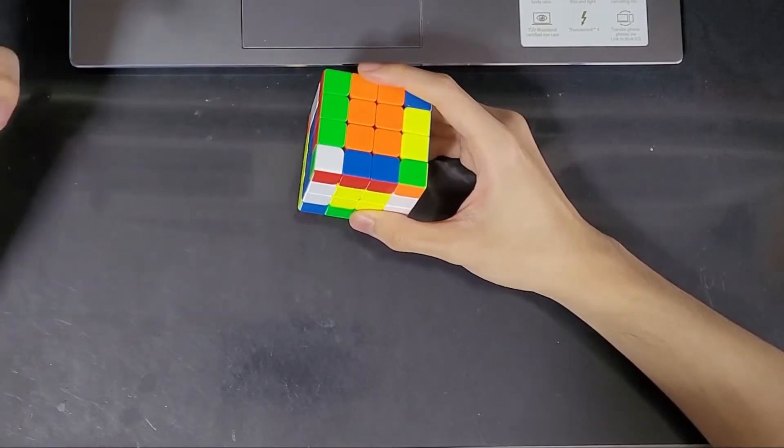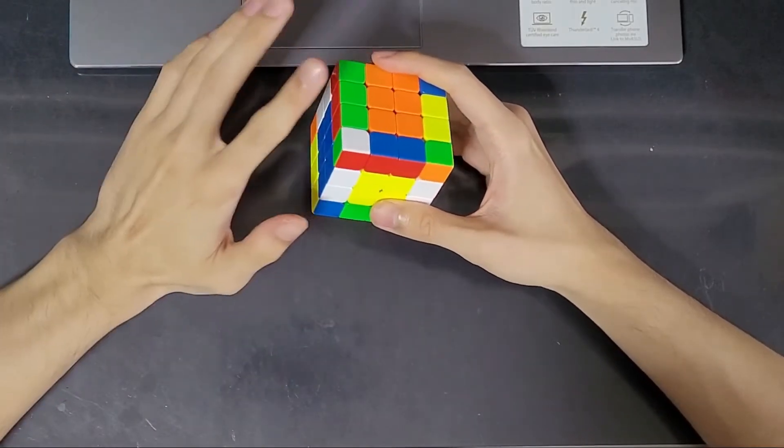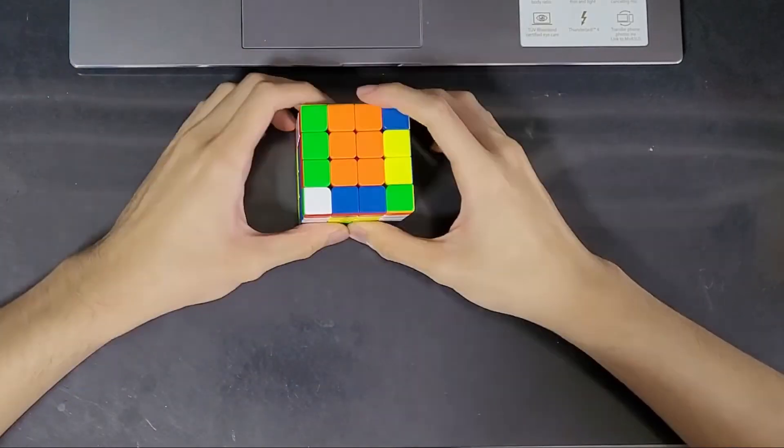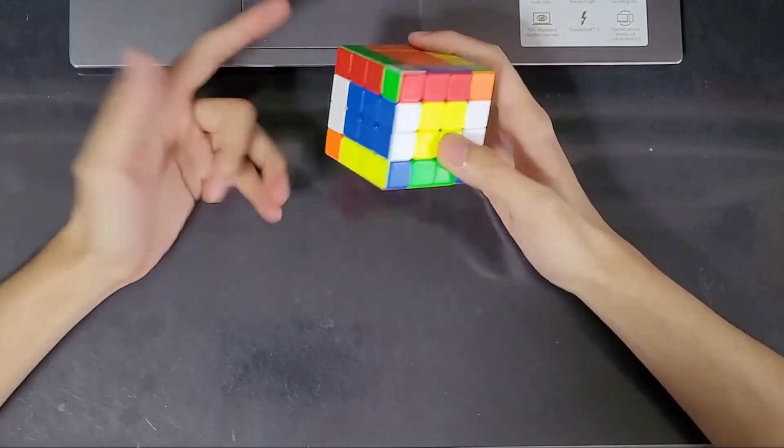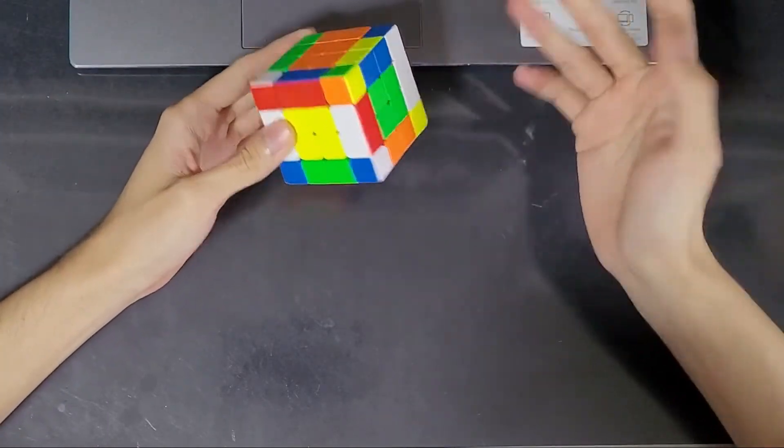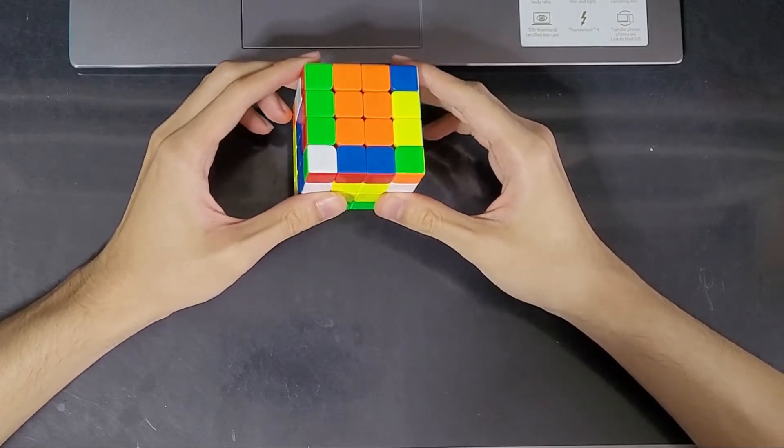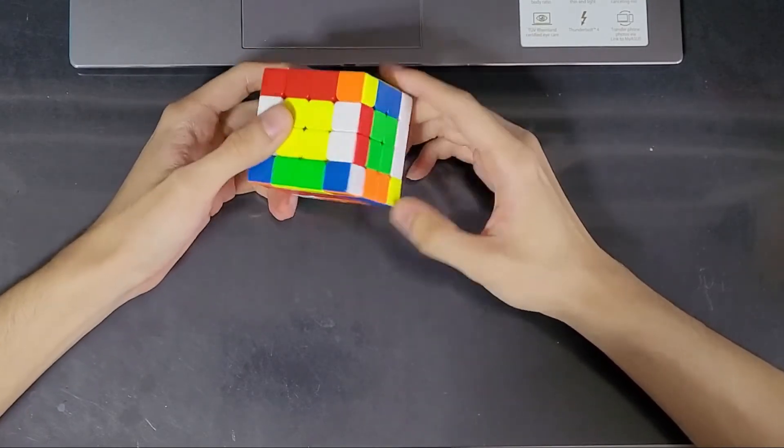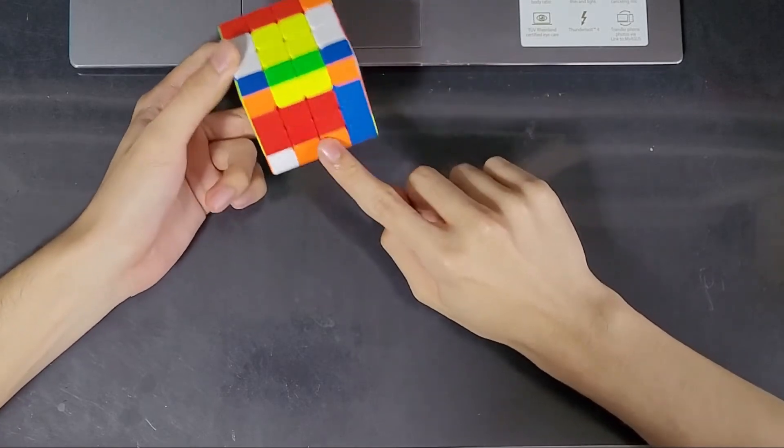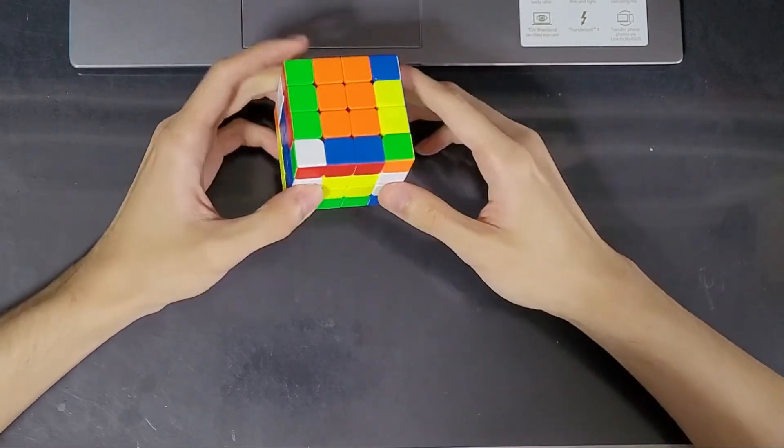In this stage we have reduced the 4x4 into a 3x3, and we can get most of it solved with a 3x3 method. I'll be using a beginner method since this is a beginner tutorial, and I'll be going through relatively fast because I'm going to assume that you can already solve a 3x3. So the first step is to get 4 edges on the bottom. In this case I'm going to get it done on red.